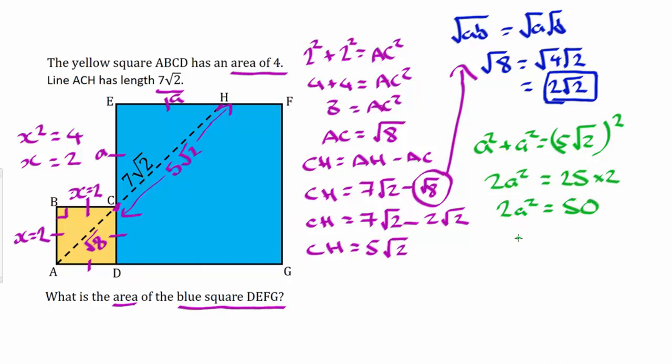Divide both sides by 2, we get A squared equals 25. So we've found now that A equals 5.